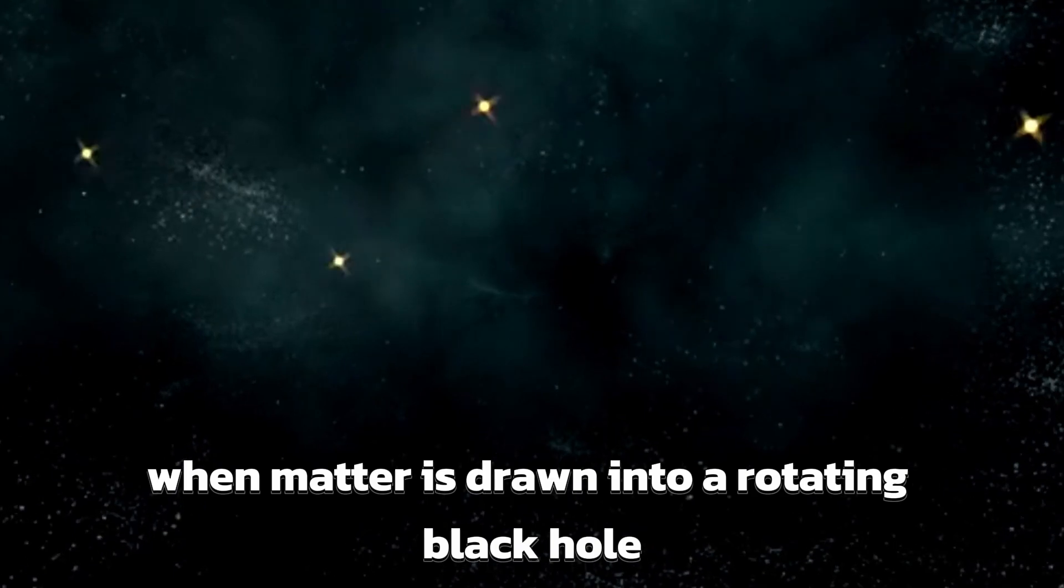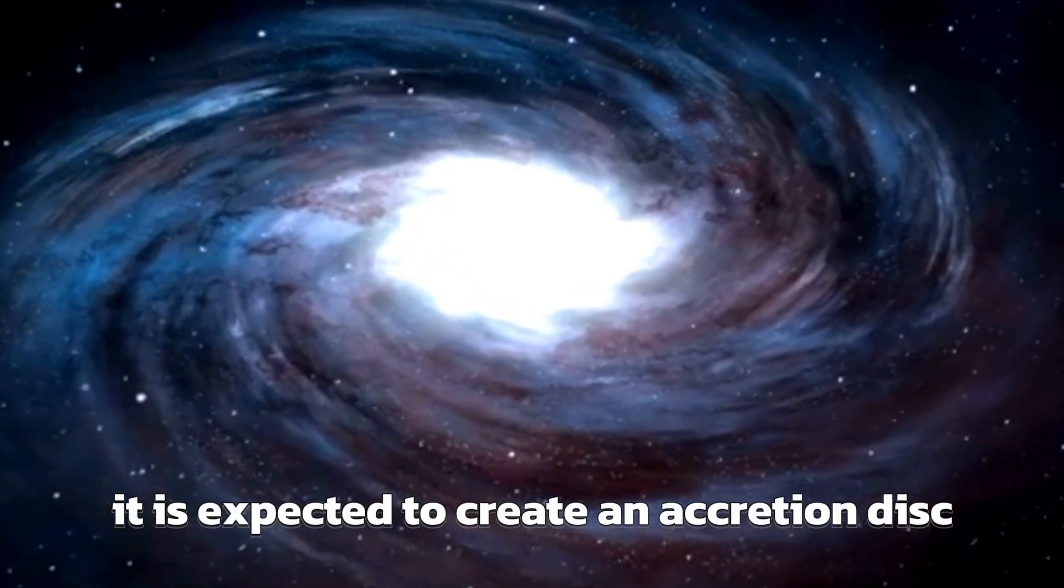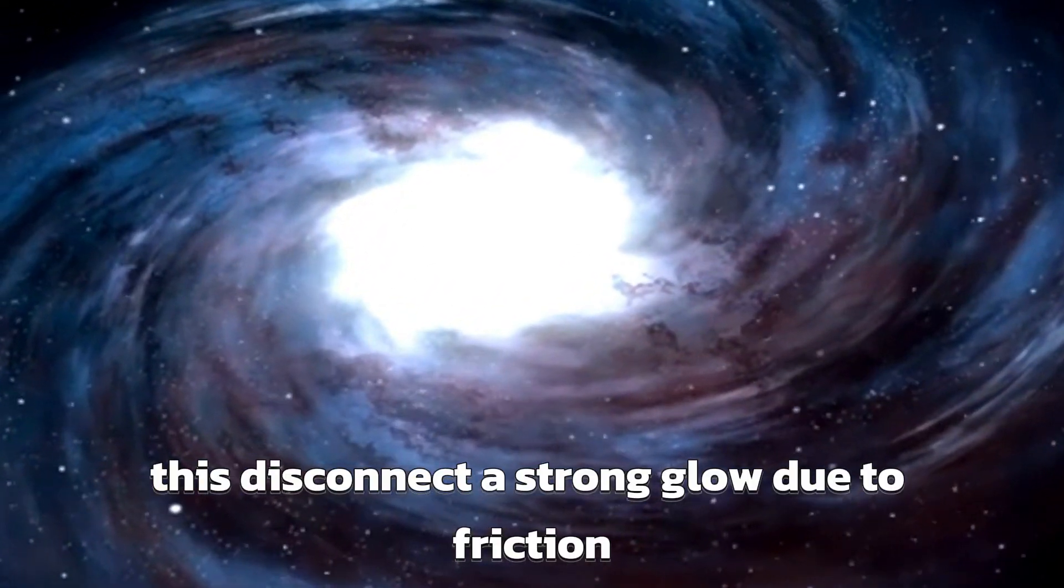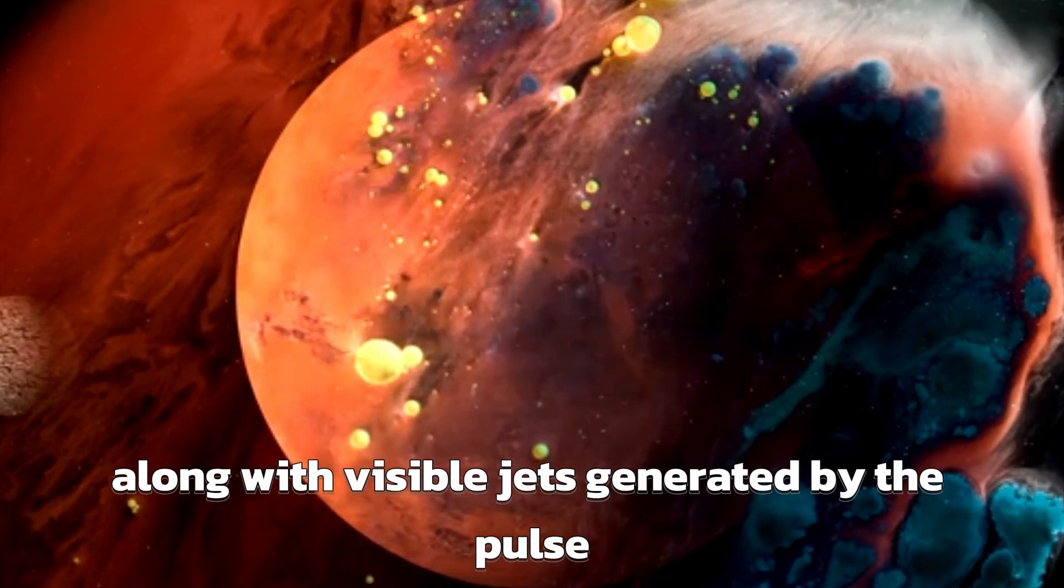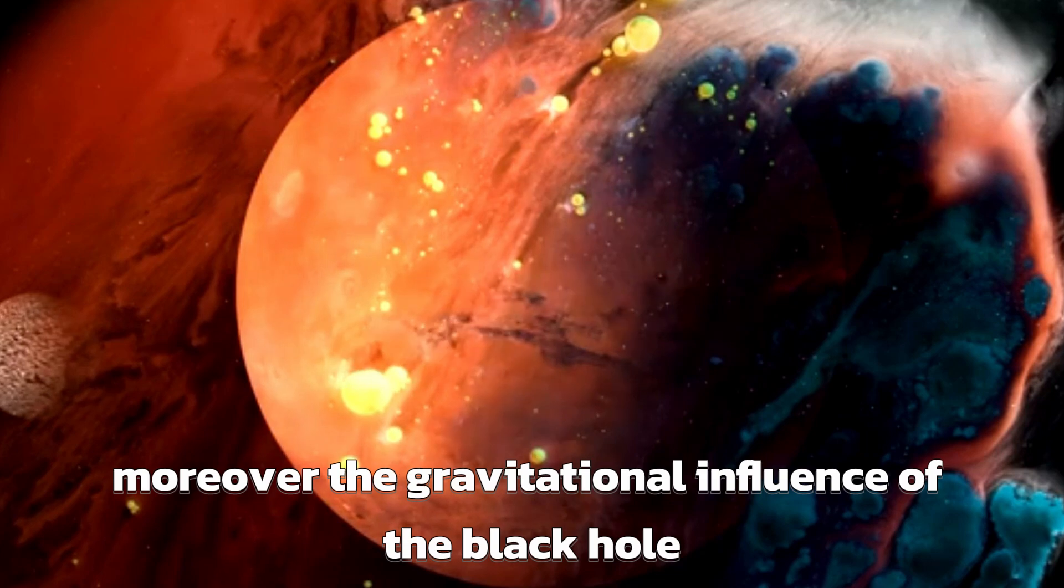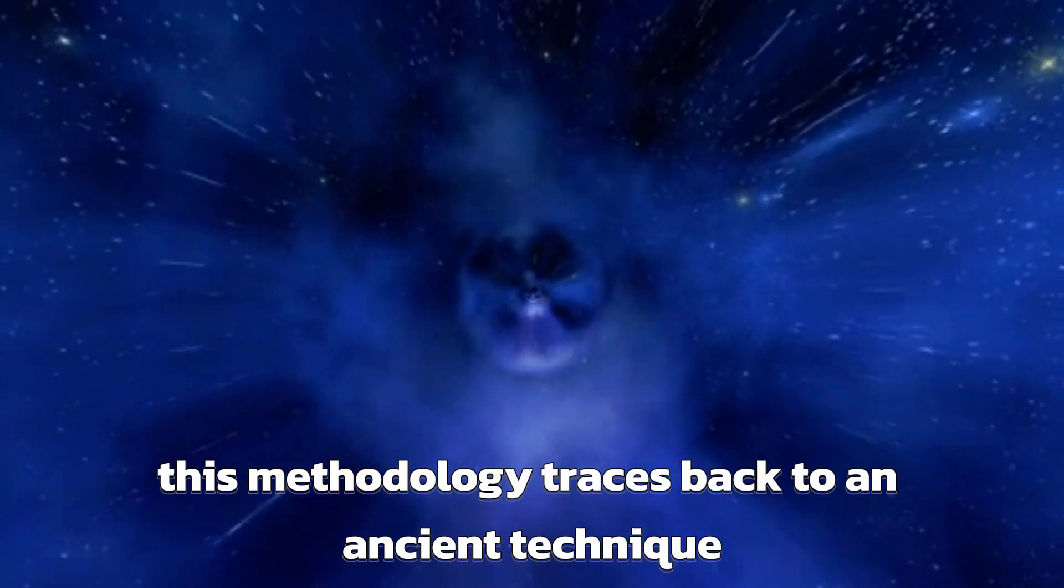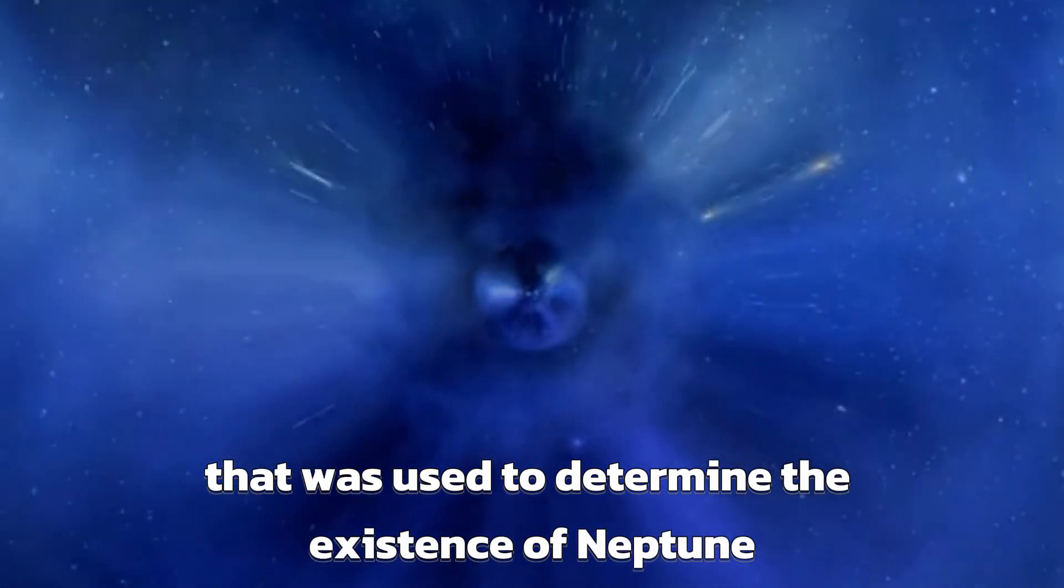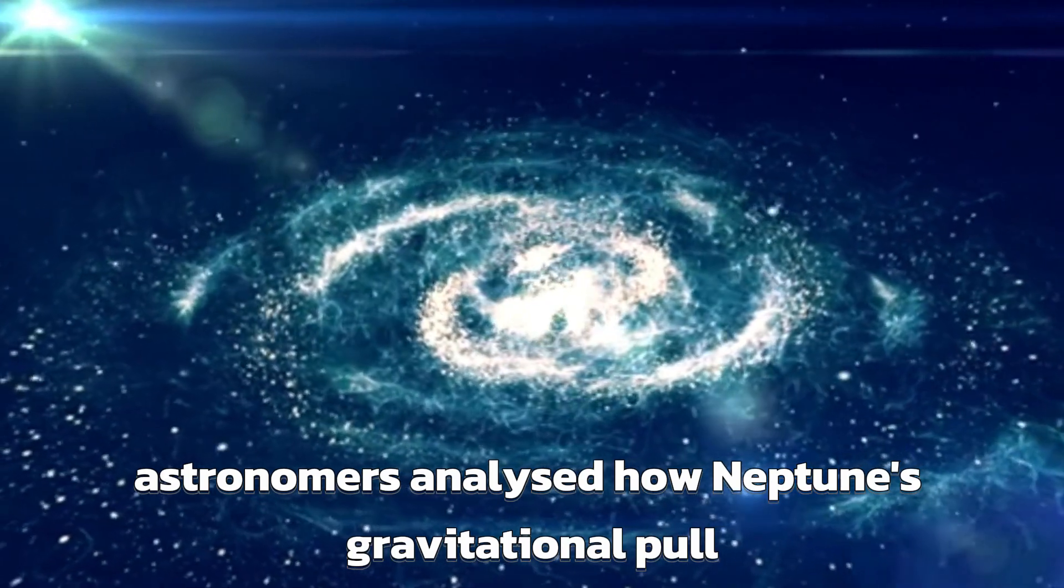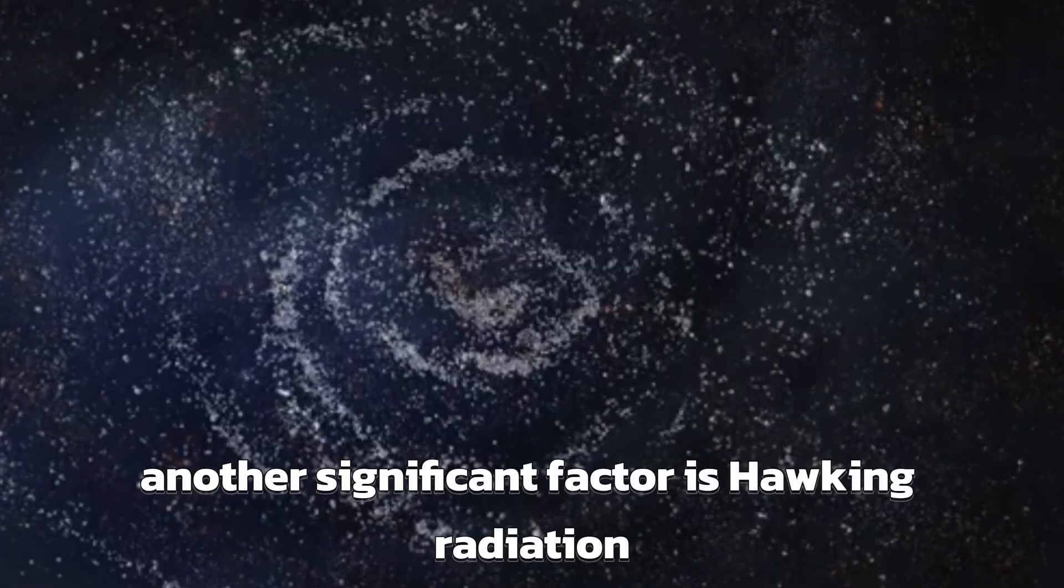When matter is drawn into a rotating black hole, a fate that befalls almost everything in the universe, it is expected to create an accretion disk. This disk emits a strong glow due to friction, along with visible jets generated by the pulse. Moreover, the gravitational influence of the black hole can extend to nearby celestial bodies. This methodology traces back to an ancient technique that was used to determine the existence of Neptune. Astronomers analyzed how Neptune's gravitational pull affected the orbits of other planets.